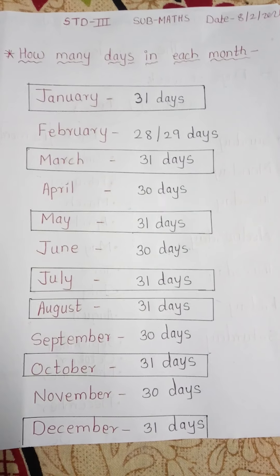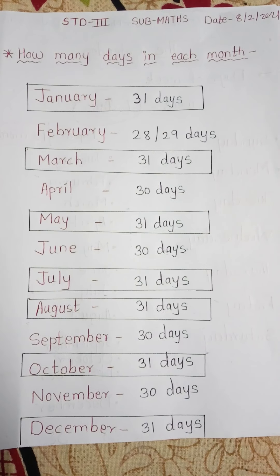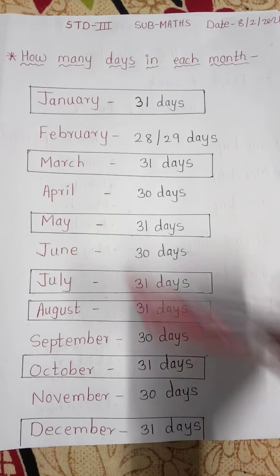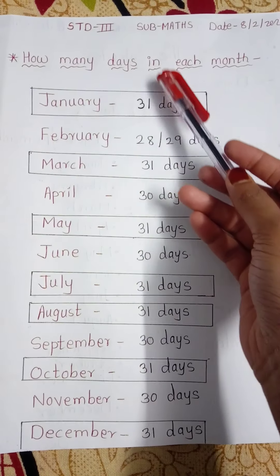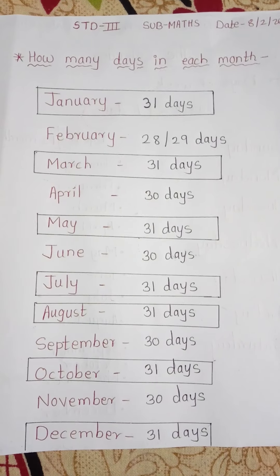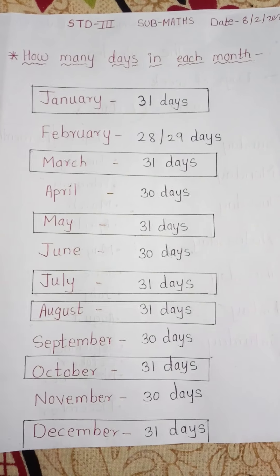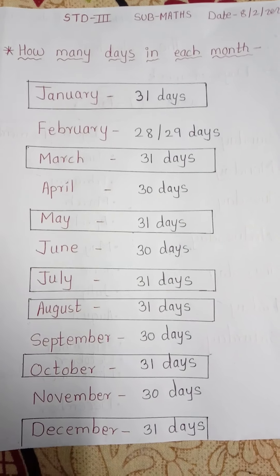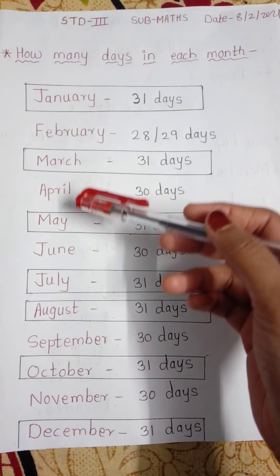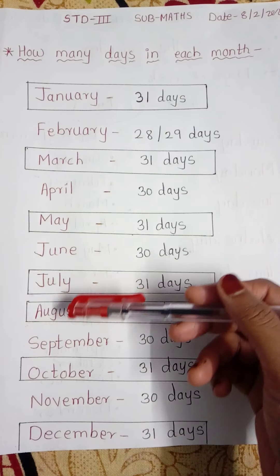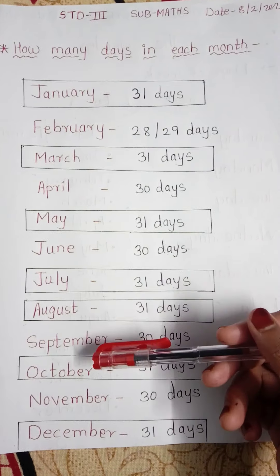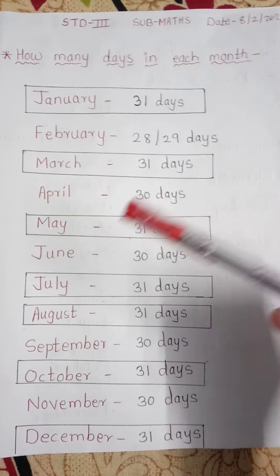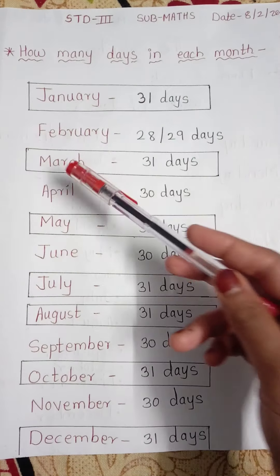Good morning students. Today we will see how many days are in each month. In one year, how many months? 12 months. January, February, March, April, May, June, July, August, September, October, November, and December. Total: 12 months. So today we will see how many days are in each month.